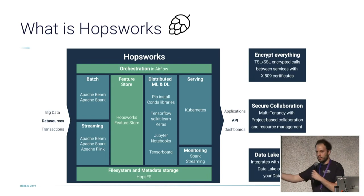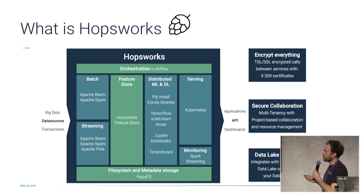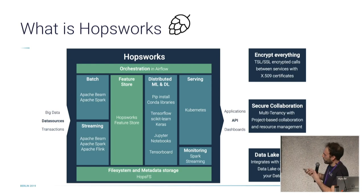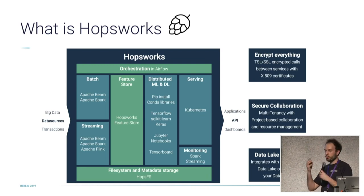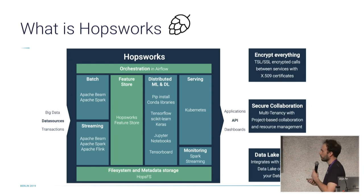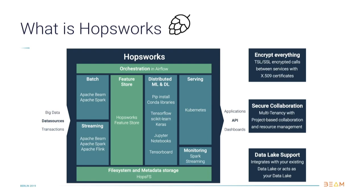Going deeper, we can see the actual technologies you can use. For batch: Beam and Spark. For streaming: Beam, Spark, and Flink. Flink does both, but specializes mostly in streaming. The feature store — which we'll explain briefly later — is a place to store your curated feature data after you've done your feature engineering. You can feed this into your distributed ML part of your pipeline, and your data scientists can use Python with libraries and frameworks such as TensorFlow, PyTorch, and Scikit-learn, implementing these things using Jupyter Notebooks. Serving in the platform is done with Kubernetes.